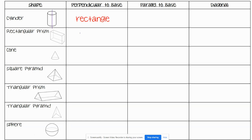If you cut the cylinder parallel to its base — so straight across — you would get the shape of its base, which is a circle. If you cut it diagonally, you're going to get an elongated circle, or an oval. The word we use for an oval is actually an ellipse, so for this cut you would get an ellipse.